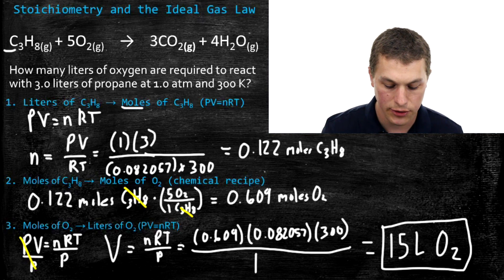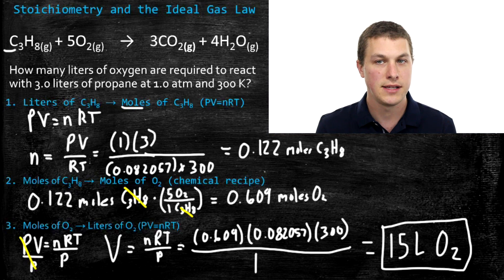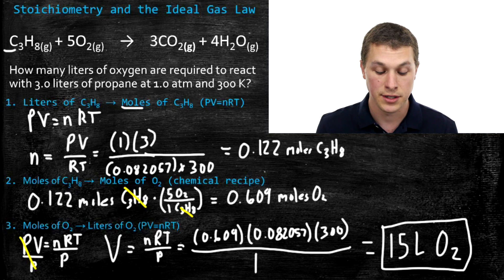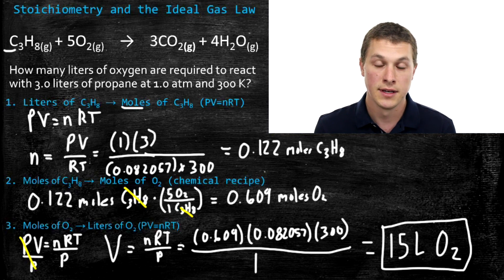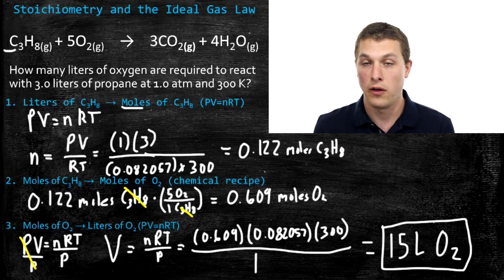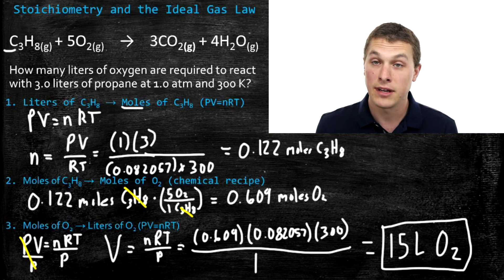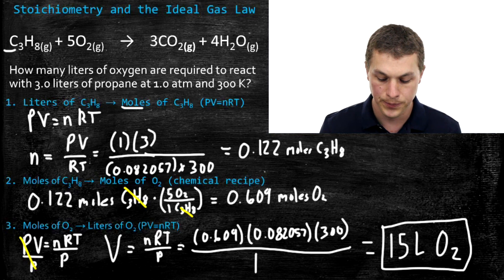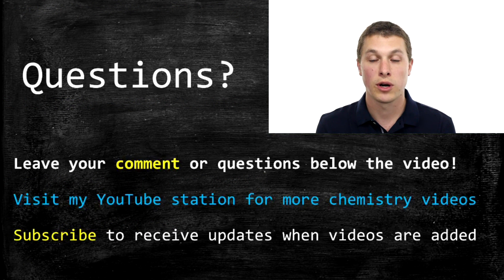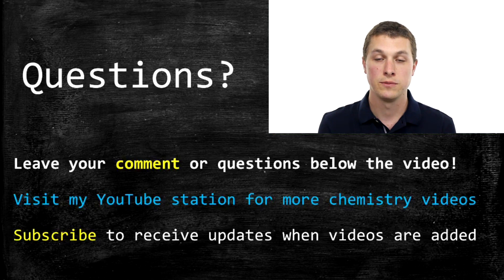So that's how many liters of O2 we need to react with 3 liters of propane. You might notice something: 15 liters of oxygen reacting with 3 liters of propane is exactly the 5-to-1 ratio from our chemical reaction, which tells us 1 mole of propane reacts with 5 moles of oxygen. The stoichiometric coefficients also work directly with volumes of gases because the ideal gas law tells us volume and moles are directly proportional. So a shortcut: since you need 5 times as much oxygen as propane, 3 liters of propane requires 15 liters of oxygen. You can combine stoichiometry and the ideal gas law to work many different problems involving gases as reactants or products. Thanks for watching this episode of Real Chemistry — please leave any questions below or subscribe for future videos.